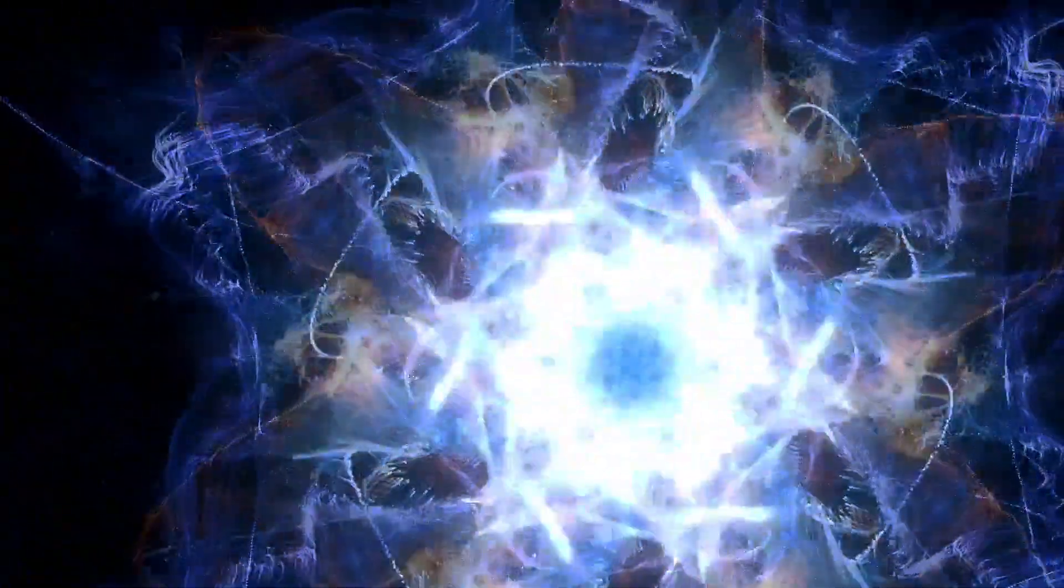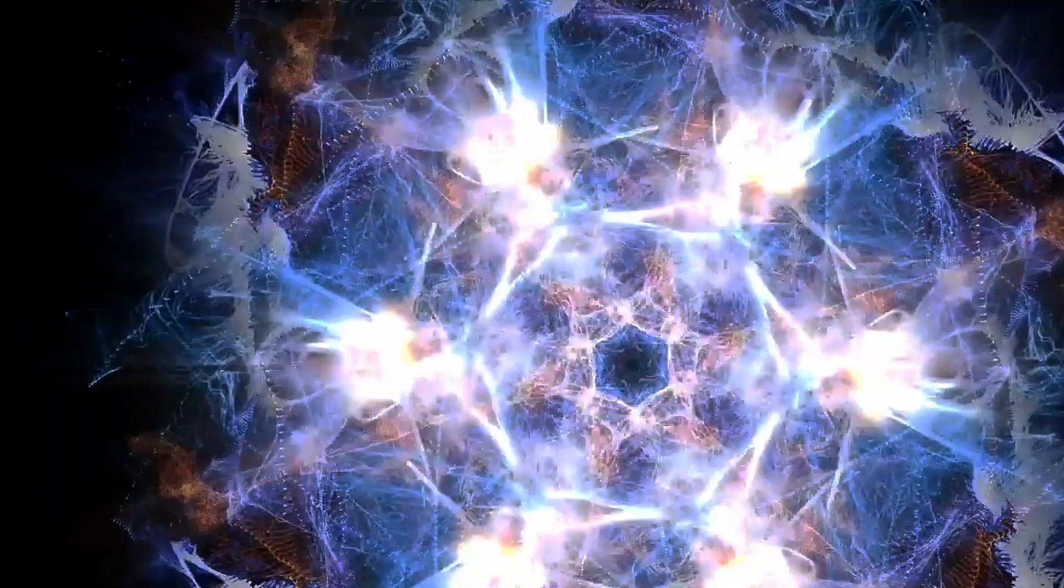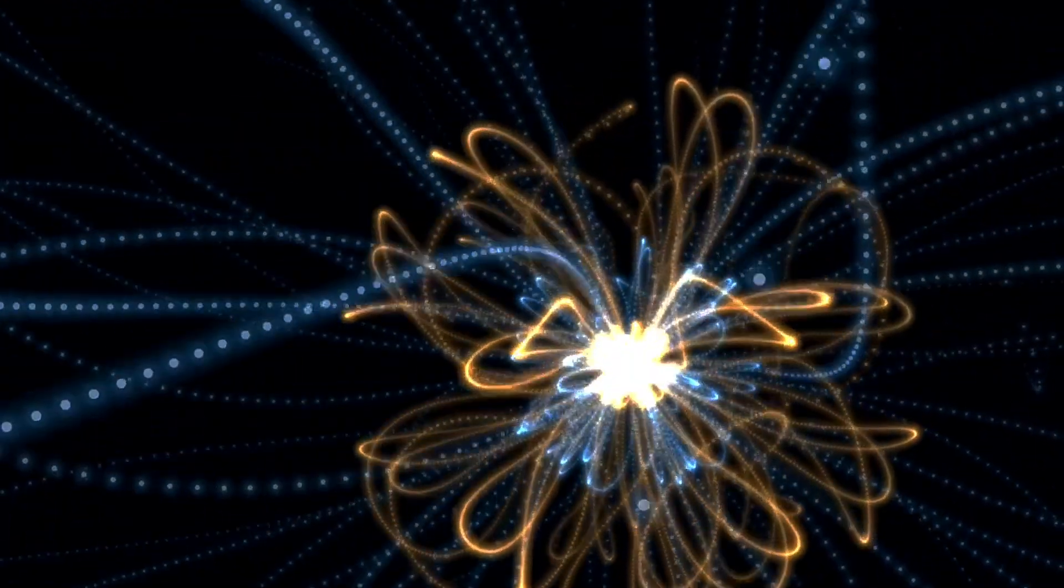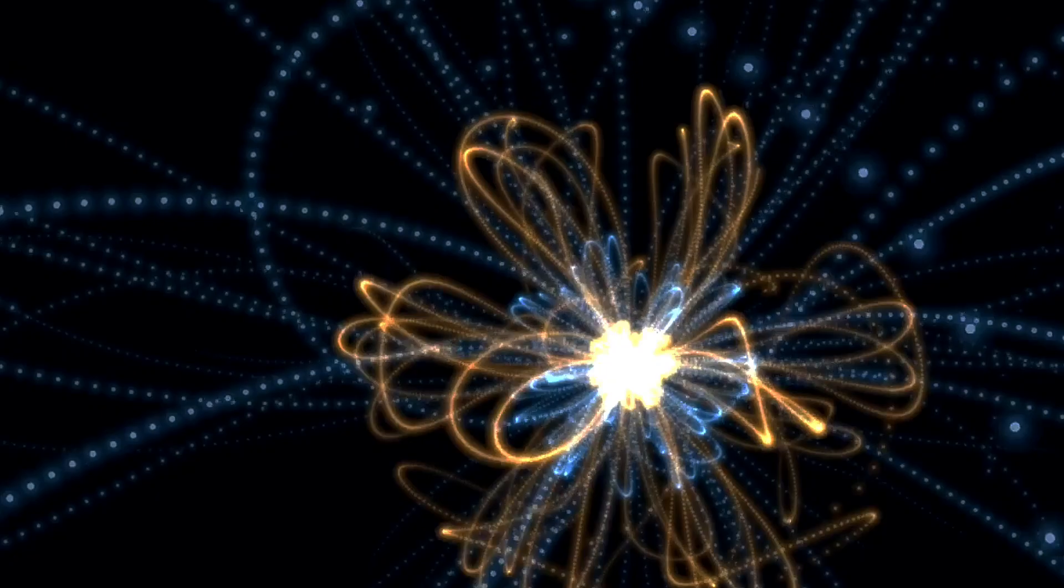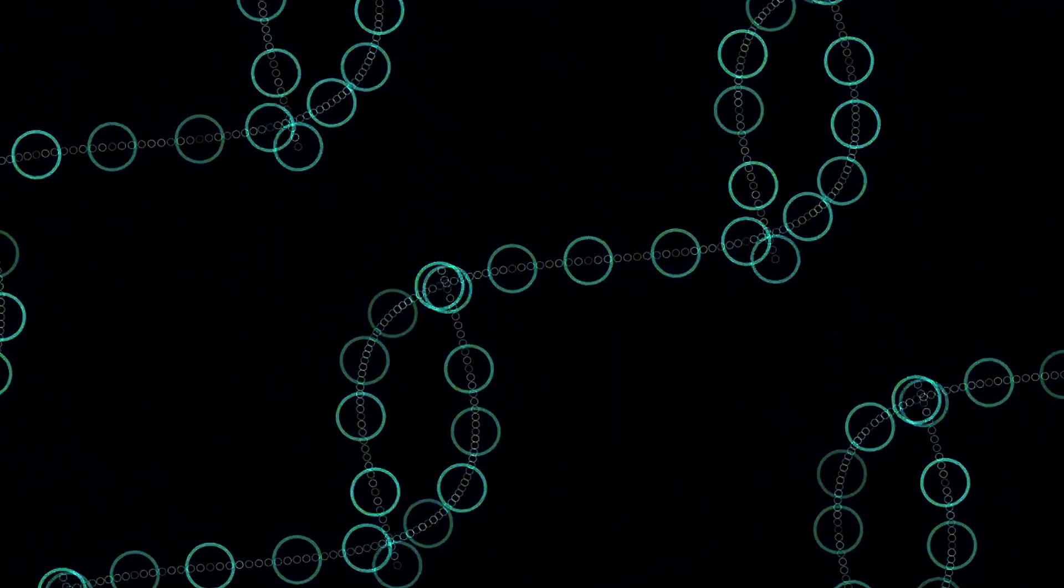Today we're diving into a mind-bending theory where time might just be an illusion created by quantum entanglement. It starts with two particles, let's call them particle A and particle B. These particles are entangled, meaning what happens to one instantly affects the other, no matter how far apart they are.